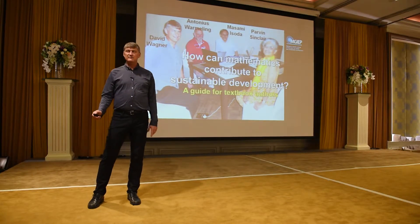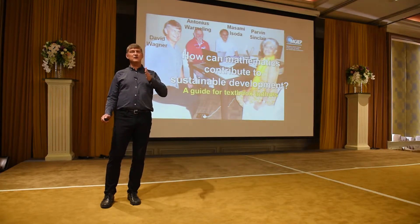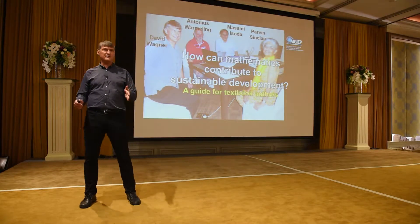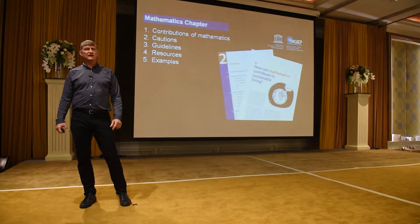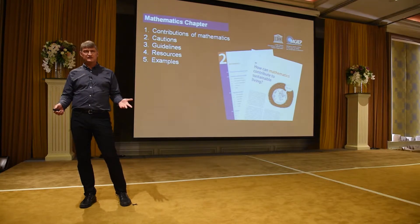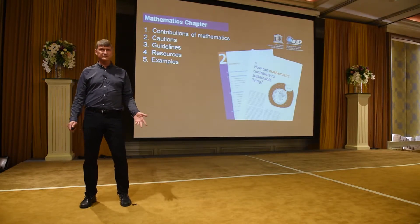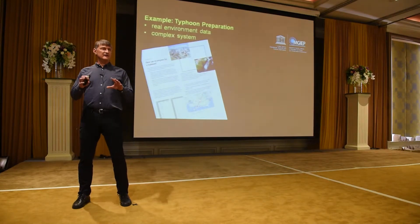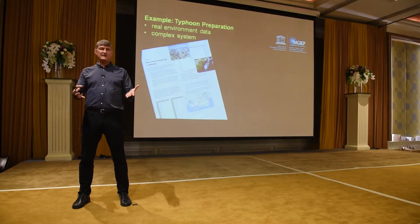In the guidebook, in the chapter, we do both the objectivity and also recognizing the human choices involved in mathematics, which are usually hidden in mathematics texts. The book explains what contributions mathematics can make to sustainable development. It explains the challenges, gives a clear set of guidelines for authors, and also illustrates the guidelines with examples. In one of the examples, there are some sample textbook pages that can be in a mathematics text.